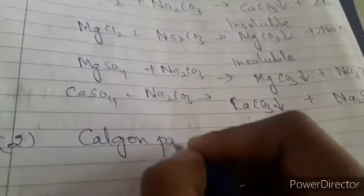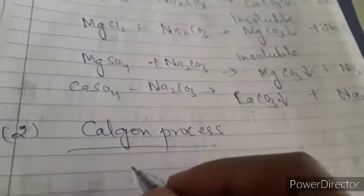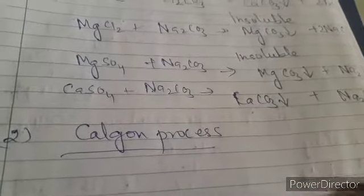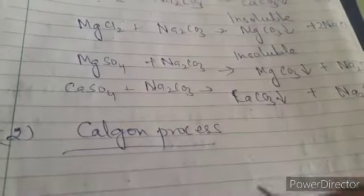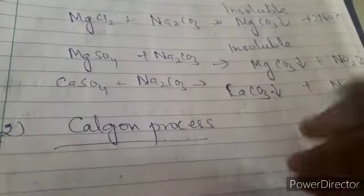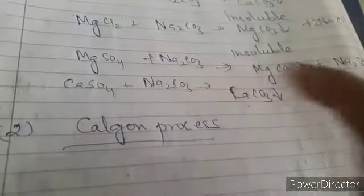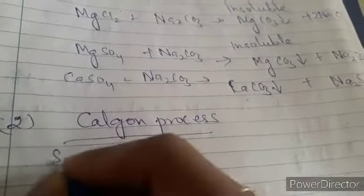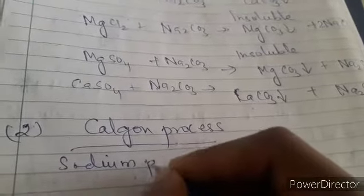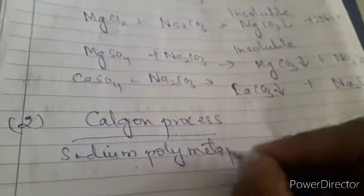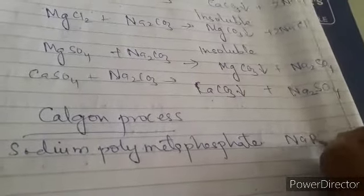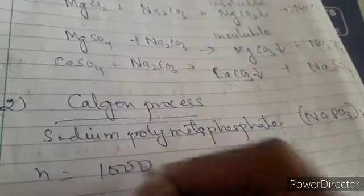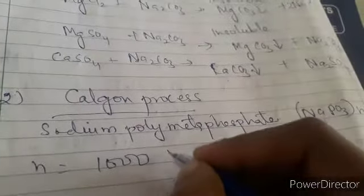The next method is the Calgon process, which is a very prominent and convenient method for softening hard water by removing calcium ions and magnesium ions. This is done by adding sodium polymetaphosphate, whose formula is (NaPO3)n, where the value of N can be equal to or greater than one thousand.